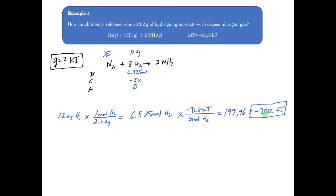The problem states that heat is being released, and you can't really release a negative number. So when the problem tells us the direction of heat — that it's released, formed, or produced — we don't put the negative sign in the final answer, because the direction is already stated in the problem. So 200. kilojoules of energy is released when we burn 13.2 grams of hydrogen. Also note: since hydrogen is a gas, instead of giving mass, a problem could give pressure, volume, and temperature, and you'd use PV = nRT to find moles.